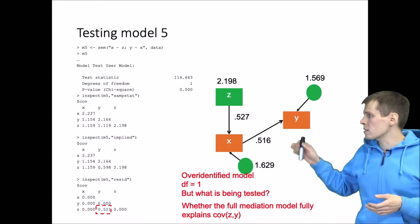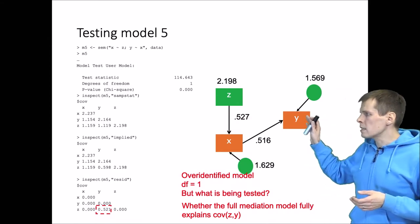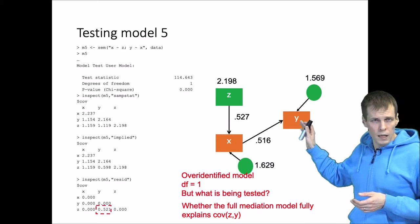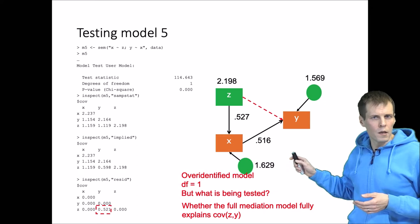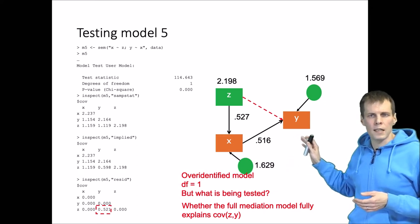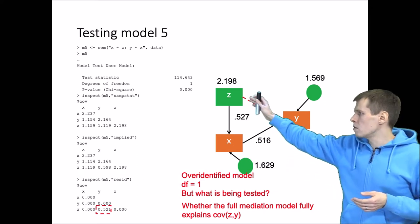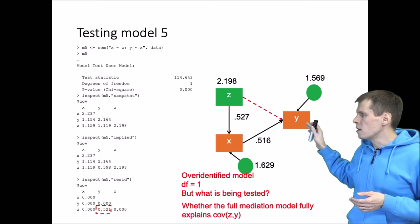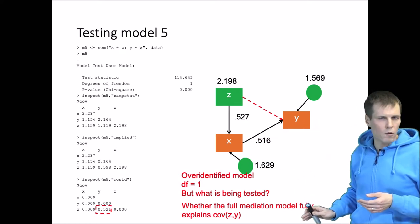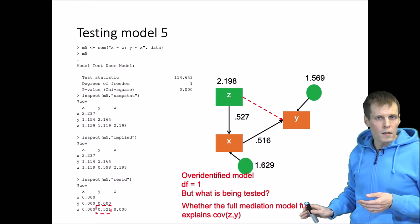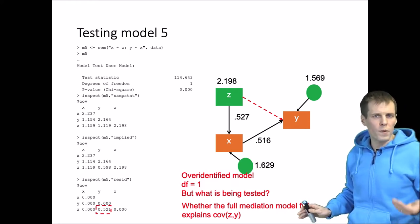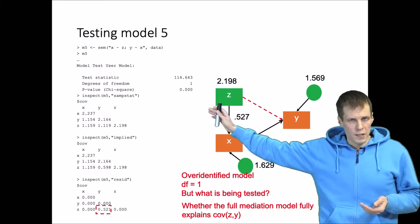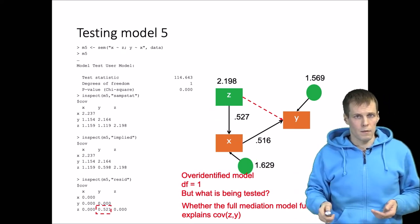Let's take a look at what the full mediation model actually tests. This model does not test the absence of this path. Rather, what is tested is whether this model ZXXY is adequate in explaining the correlation between Z and Y. There are, of course, a number of different alternative models that could be considered when this model is rejected.